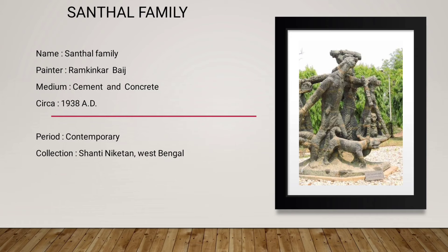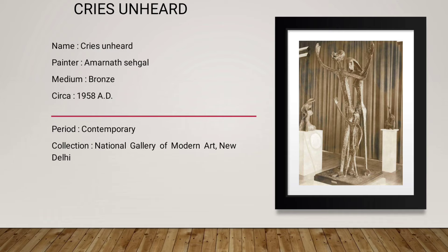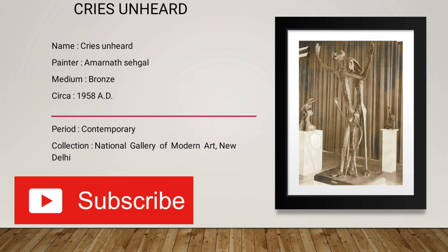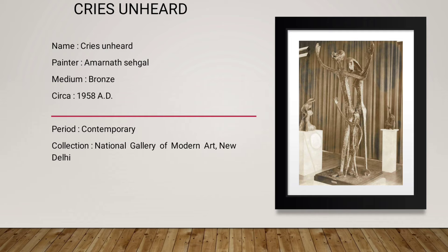Next is Christ Unheard. The artist is Amar Nath Sehgal. The medium is bronze. Circa 1958-80. Period: contemporary. Collection: National Gallery of Modern Art, New Delhi. In this figure, Amar Nath Sehgal has made a bronze statue. He has basically shown poverty. There are 3 human figures — father, mother and child — the same family. They have dented cheeks and deformed faces, and a malnutrition type of body. He has depicted poverty in this figure.